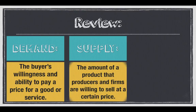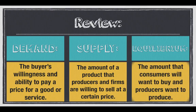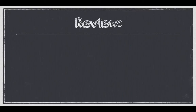Supply is the amount of a product that producers and firms are willing to sell at a certain price point. Equilibrium is the amount that consumers want to buy and the amount that the producers want to produce — and it's where they meet in perfect harmony.